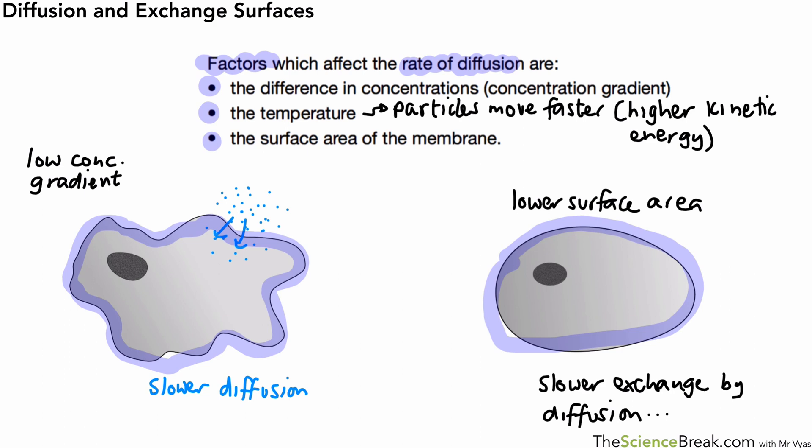Okay, so that's an overview of the definition of diffusion, examples of where it happens in living things, and factors that affect how quickly it works. Thanks for watching. I'll see you again soon.